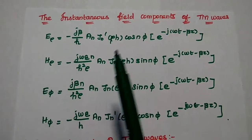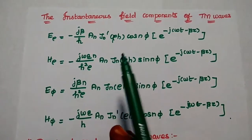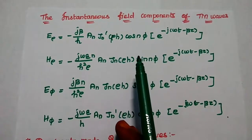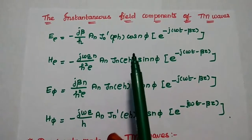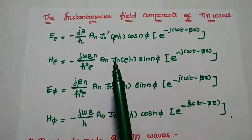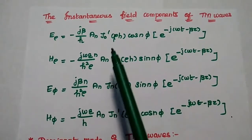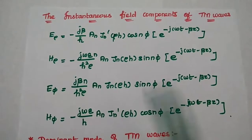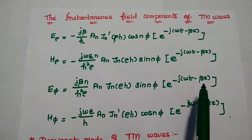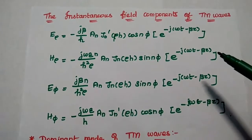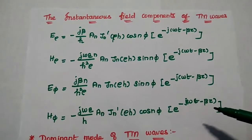Next, the instantaneous field components of TEM waves. We have just derived the field components of TEM waves, and now here it is for instantaneous field components — instantaneous means with respect to time. We are going to multiply all the field components with the term e to the power minus J of omega T minus beta Z. These are the instantaneous field components of TEM waves.